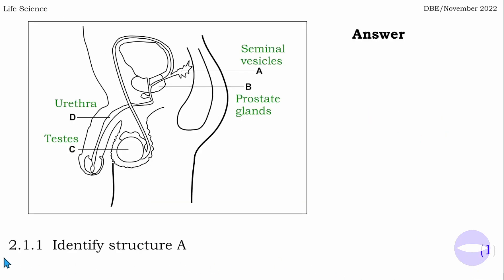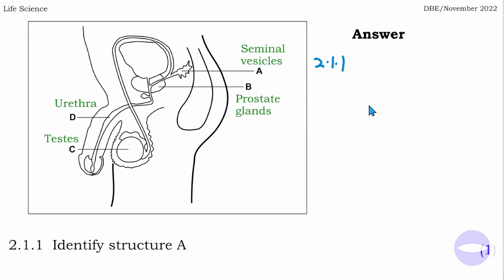Question 2.1.1 says: identify structure A. Structure A is the seminal vesicle. So the answer to 2.1.1 is the seminal vesicle.